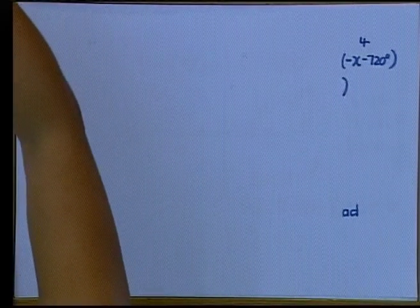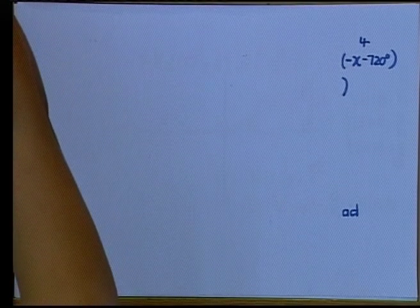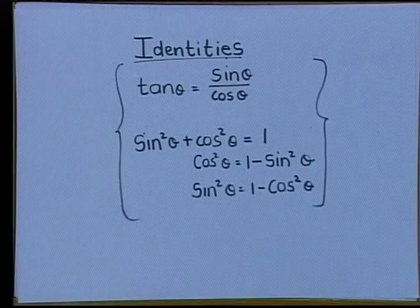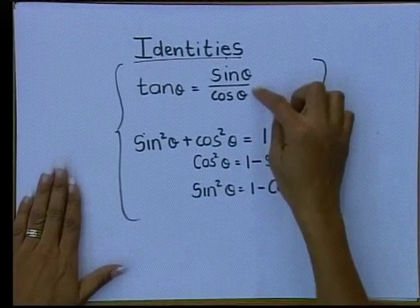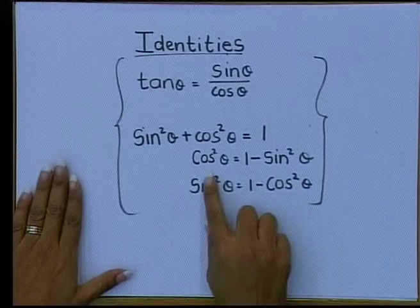The identities - I have asked you, please, before you do anything else, to write down your identities. It is sin squared plus cos squared equals one. Please, Grade 12, you need to know this. There are your identities. Tan is sin over cos. Sin squared plus cos squared is one.